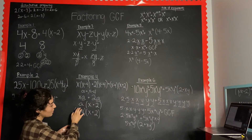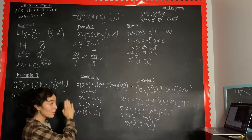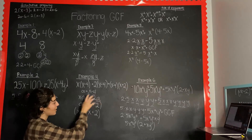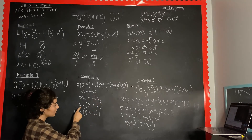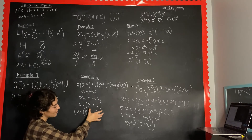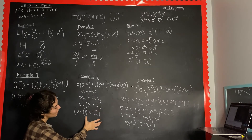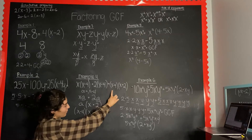Now that we've factored out our greatest common factor we substitute the expression back in. Since a equals x minus 4, bring x plus 2 down, and the final answer is (x minus 4)(x plus 2).